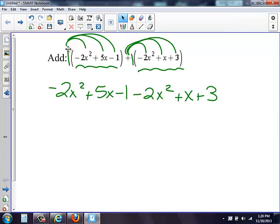Next, I need to combine my like terms. I look at my equations. I'm going to look for my x squareds first. I have a negative two x squared here and a negative two x squared there.